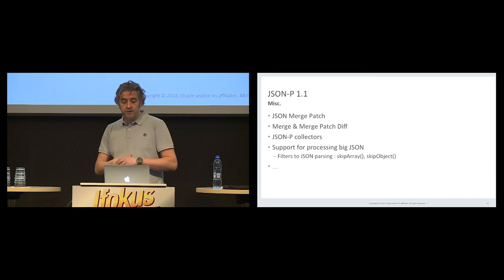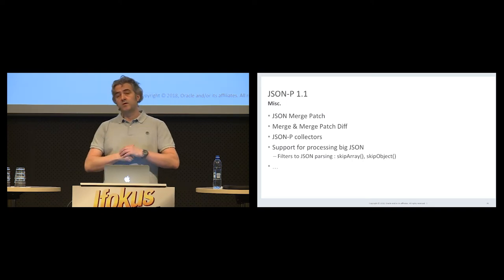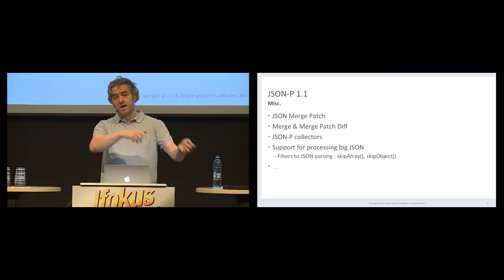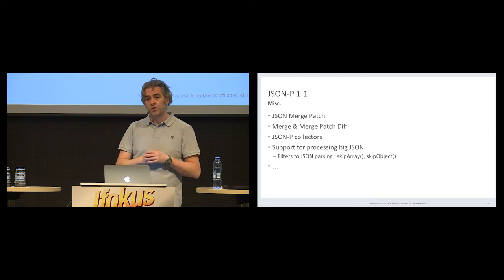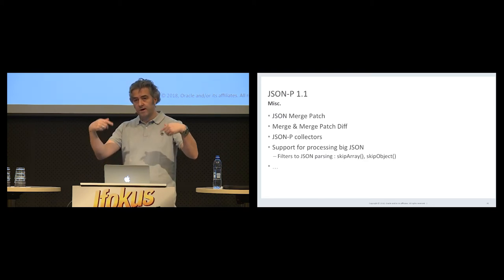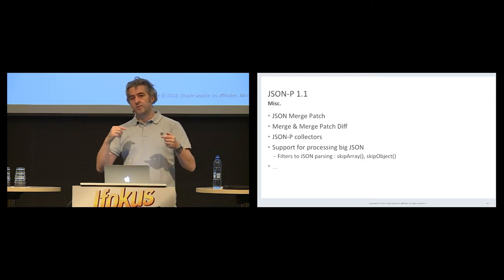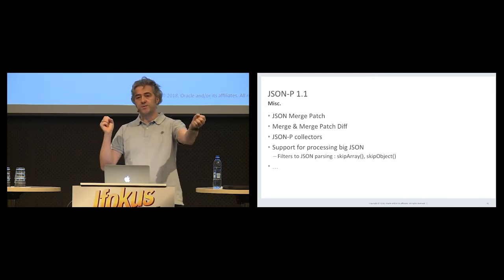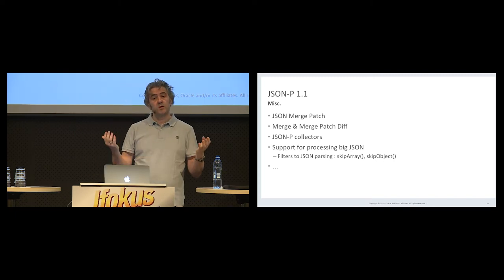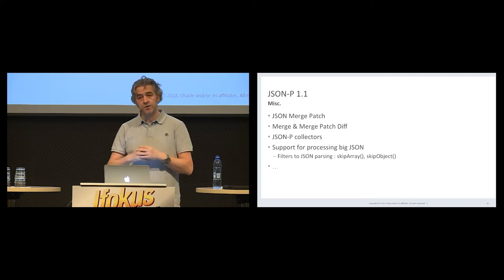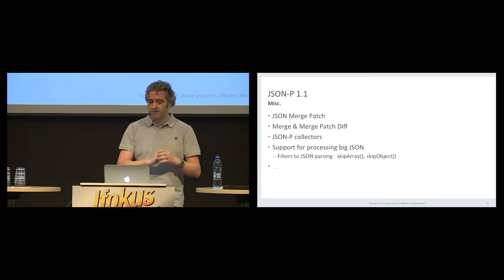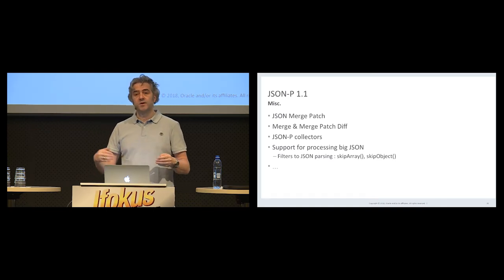That was a very short overview of JSON-P 1.1. JSON-P 1.1 also added support for JSON Merge Patch — a different way of modifying a JSON document. So we have patch and merge patch in JSON-P 1.1, both used to modify a JSON document. We also have the reverse operation — a diff operation that gives you a JSON Patch describing the difference between two JSON documents. JSON-P 1.1 also added support for JSON-P collectors so you can use the Stream API without having to define your own custom JSON-P collectors.